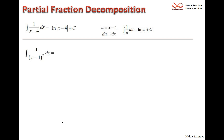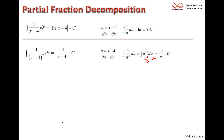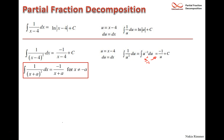For 1/(x - 4)², again let u = x - 4, du = dx. Now 1/u² = u⁻², which integrates to u⁻¹/(-1) = -1/u, giving -1/(x - 4). In general, the integral of 1/(x + a)² is -1/(x + a), provided x ≠ -a — a formula worth keeping on a cheat sheet.